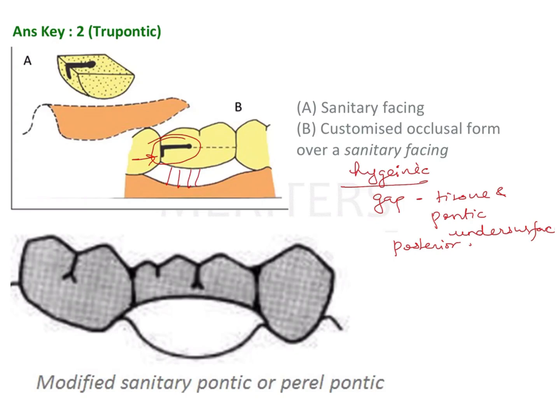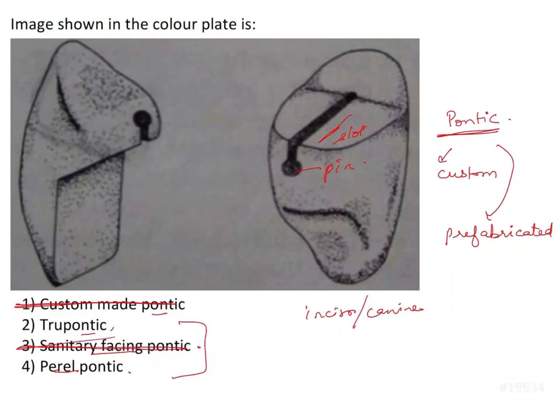The next option is peril pontic. Peril pontic is a modification of the sanitary or hygienic pontic, where you have a dome-shaped or arc-shaped undersurface. This enhances hygiene maintenance for the patient. Again, it is a custom-made pontic and is not indicated in anterior areas, so peril pontic is also eliminated.